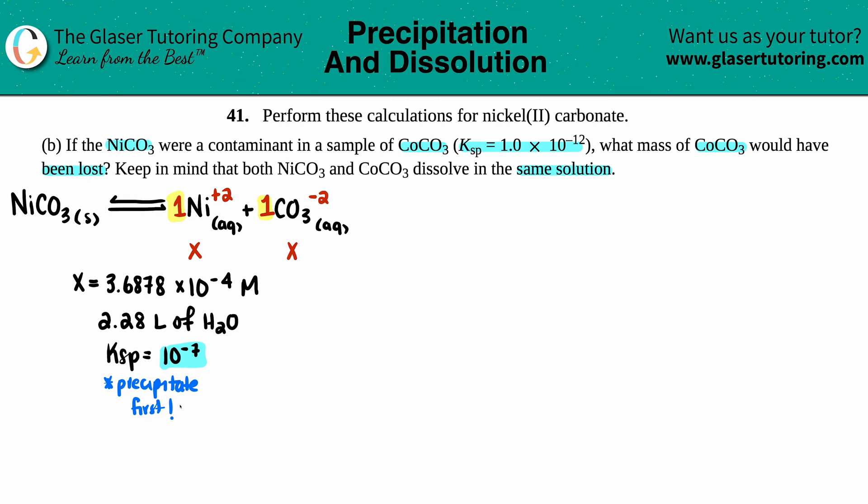Now we have to find out by how much we're going to lose. Let's write out the Ksp equation for our new compound. We have CoCO3 solid at equilibrium, which becomes cobalt plus carbonate. Since carbonate is negative two, the cobalt has to be plus two. Both are aqueous.